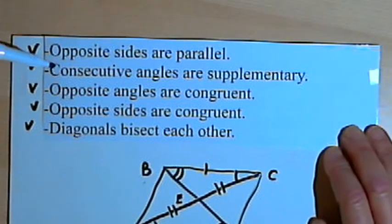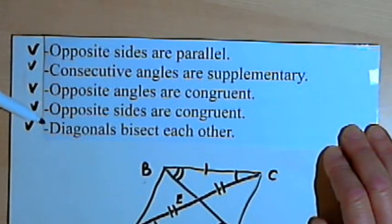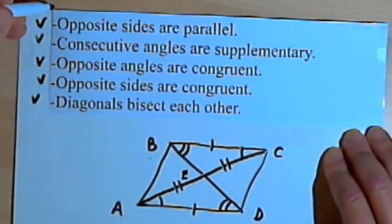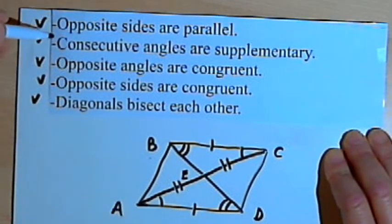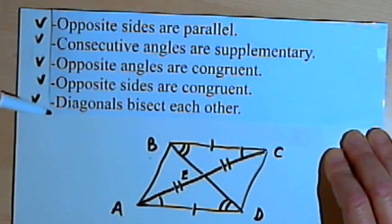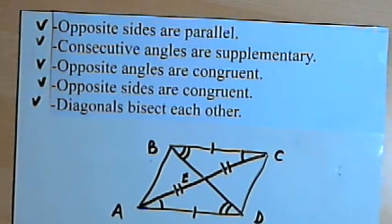So these are your five basic properties for all parallelograms. You can memorize the properties if you want, but if you'd rather not memorize, you can just know the definition of a parallelogram and derive each of these properties. That's it for now — take care, I'll see you next time.